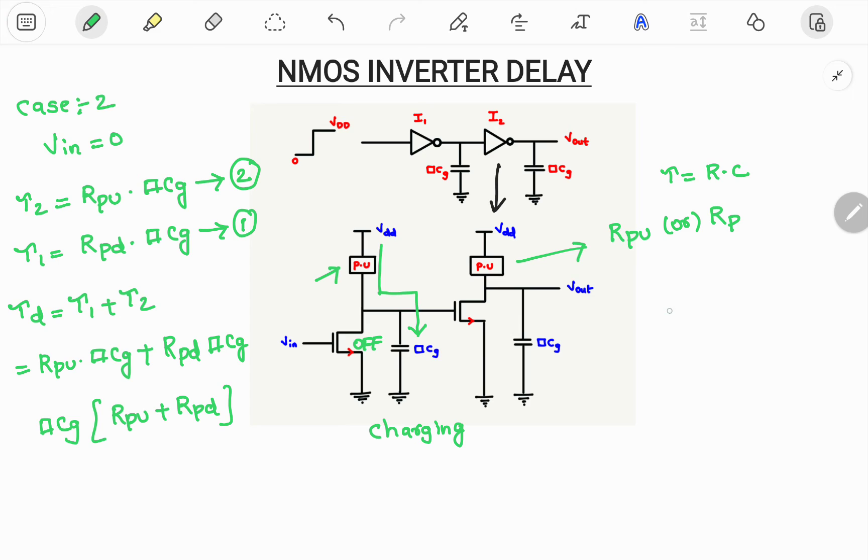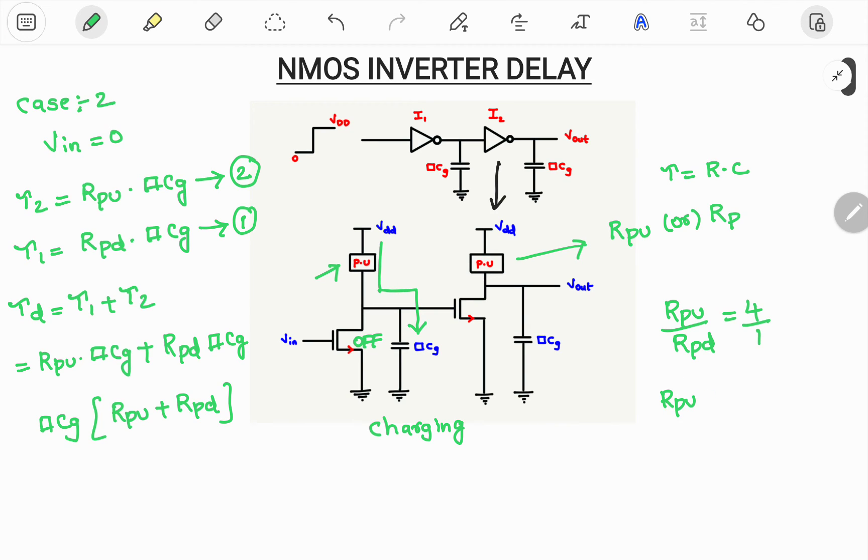Here you have to remember one relation, the pull up to pull down ratio. R pull up to R pull down ratio will be 4 to 1. Means simply pull up is 4 times pull down. So substitute that condition. So tau D equals CG times, pull up is 4 times RPD plus RPD which is pull down. So this becomes CG into 5 times RPD.